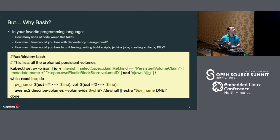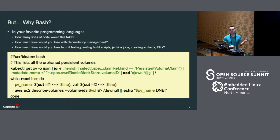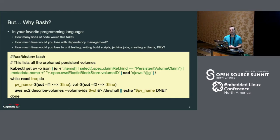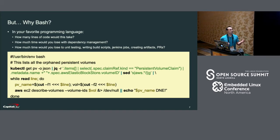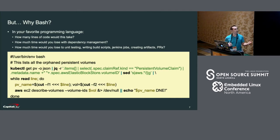Here I've got an example script. You don't really need to understand this script. All you need to know is this is going to list all of the orphaned volumes in your Kubernetes cluster. The point I'm making is it's eight lines of code. It took me 10 minutes to write this. Think about if you had to do this in your own programming language — how long would it take to write it, to test it, to get it into your CI/CD pipeline, to produce artifacts? Bash scripts are often the fastest way to get a job done.